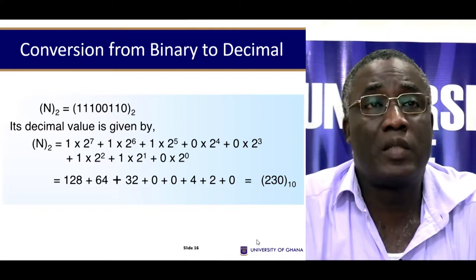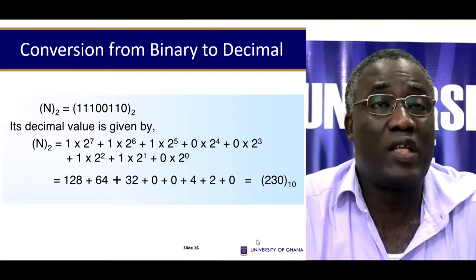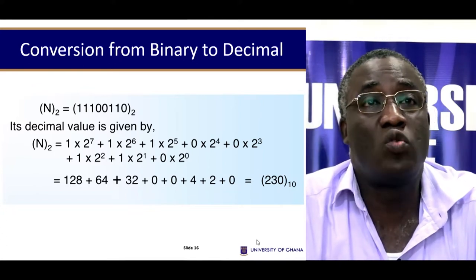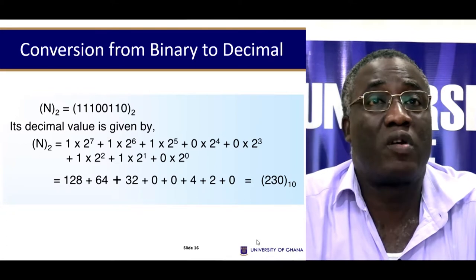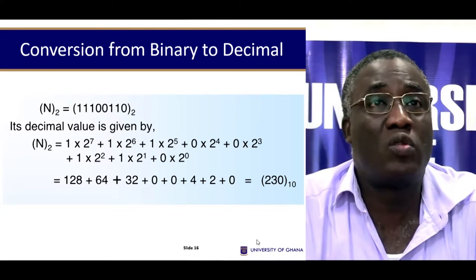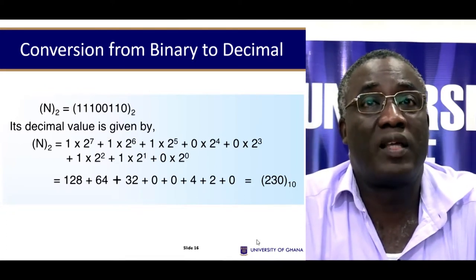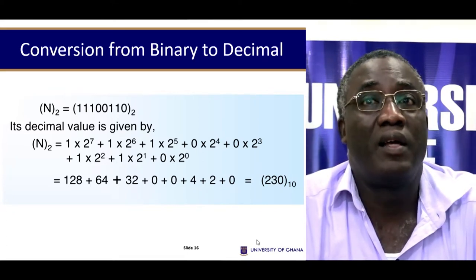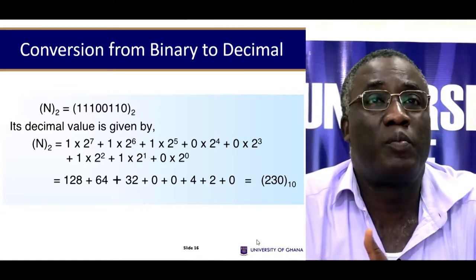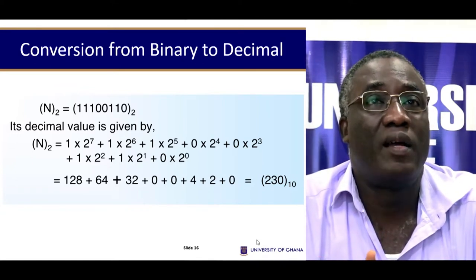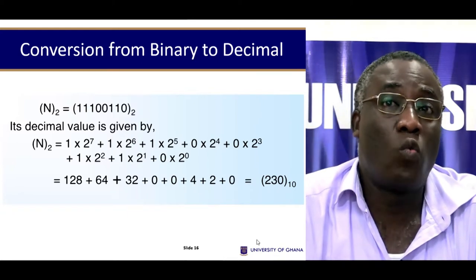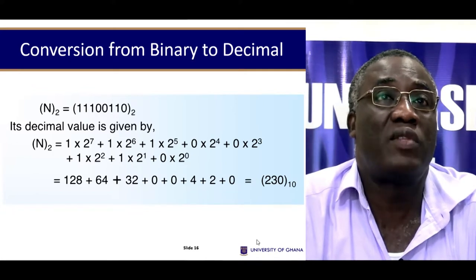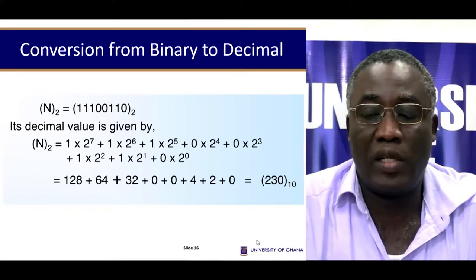The highest power will be 2 to the power of 7, which is the leftmost — the most significant bit. So: 1×2⁷ + 1×2⁶ + 1×2⁵ + 0×2⁴ + 0×2³ + 1×2² + 1×2¹ + 0×2⁰. You then work this out and add up the resulting values to give you the decimal number.